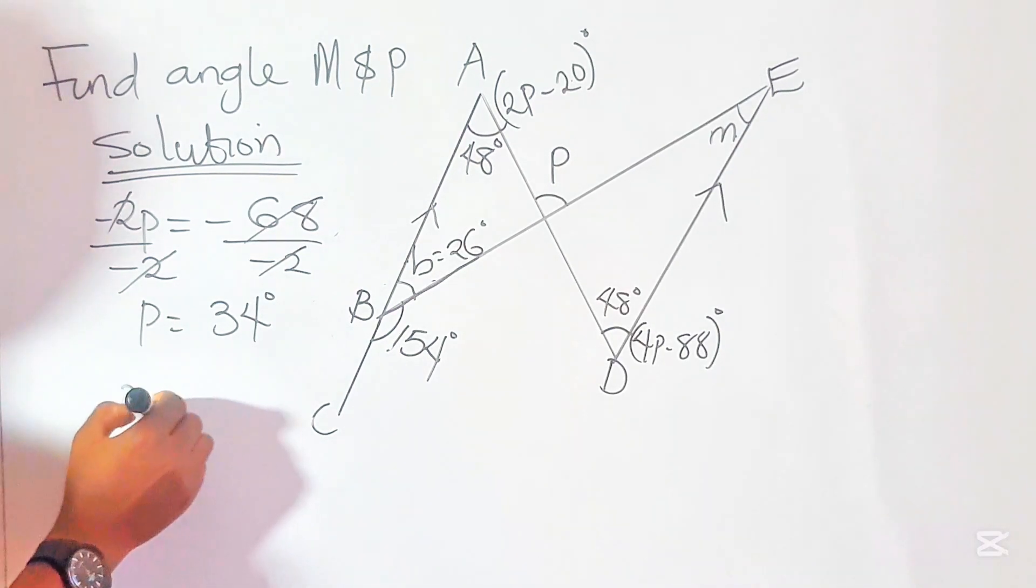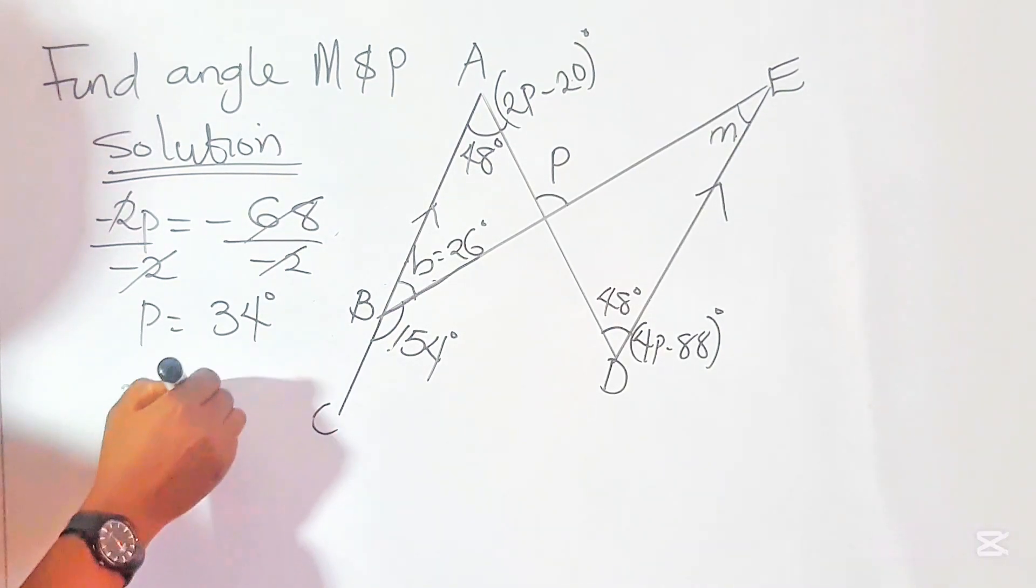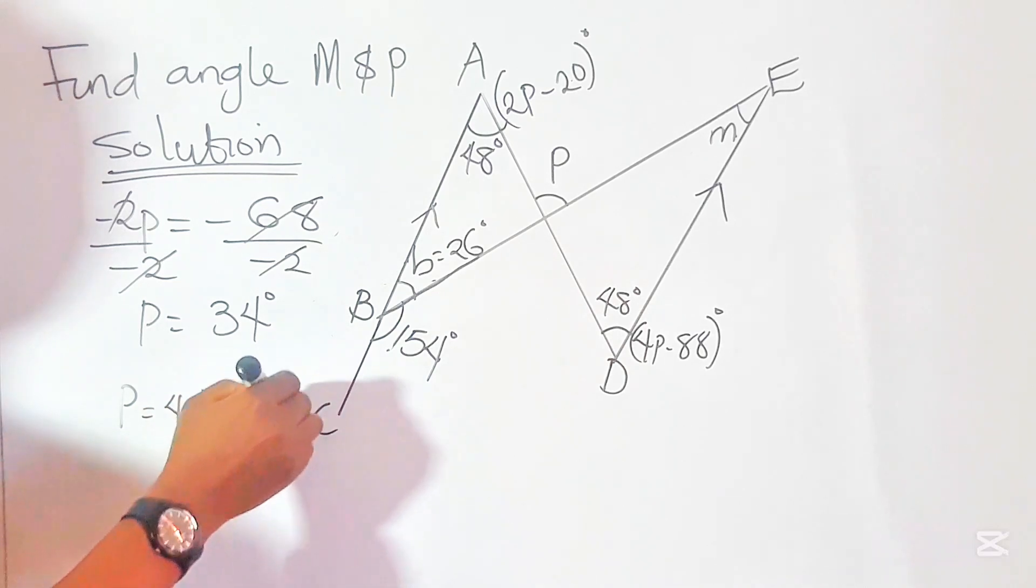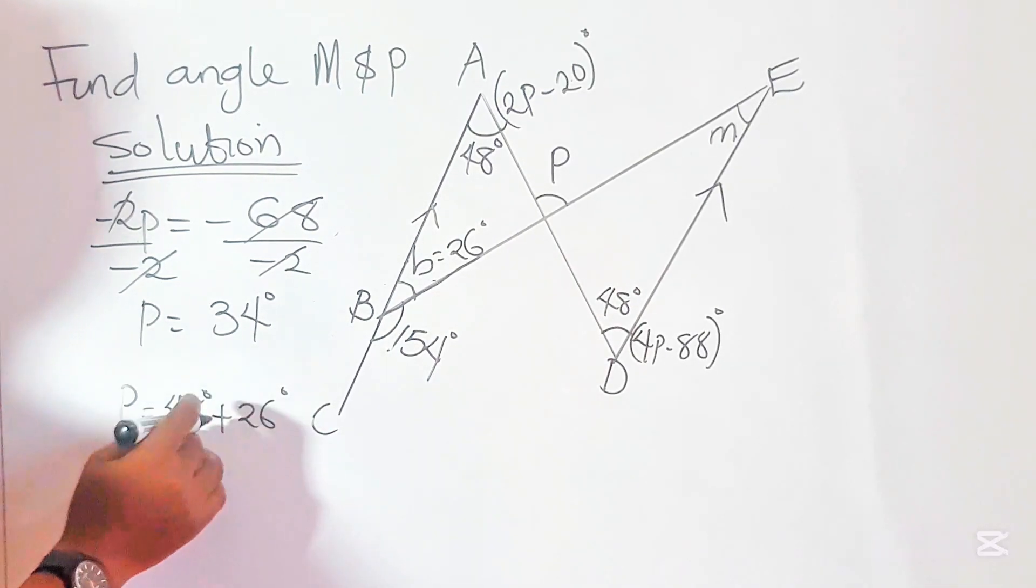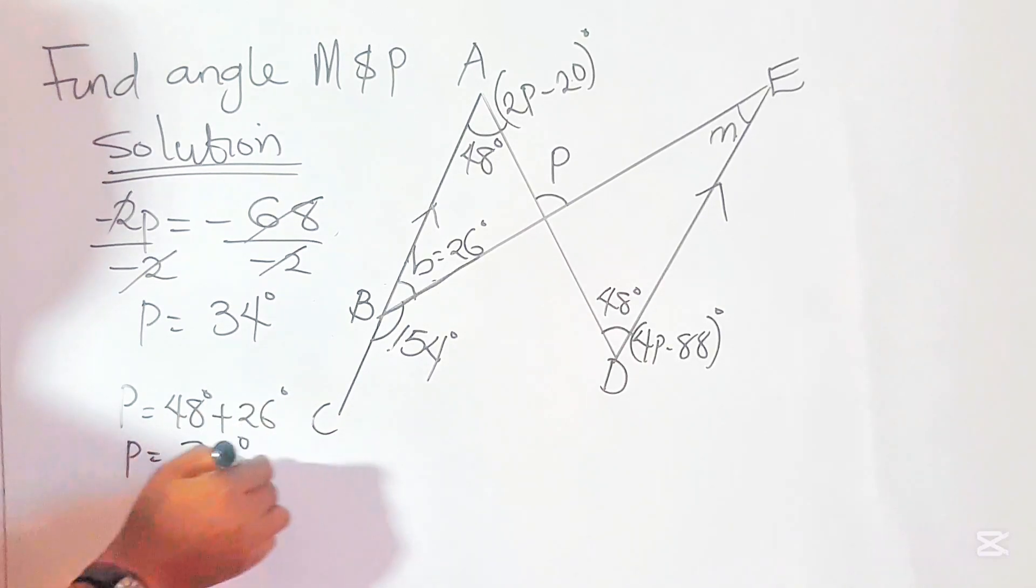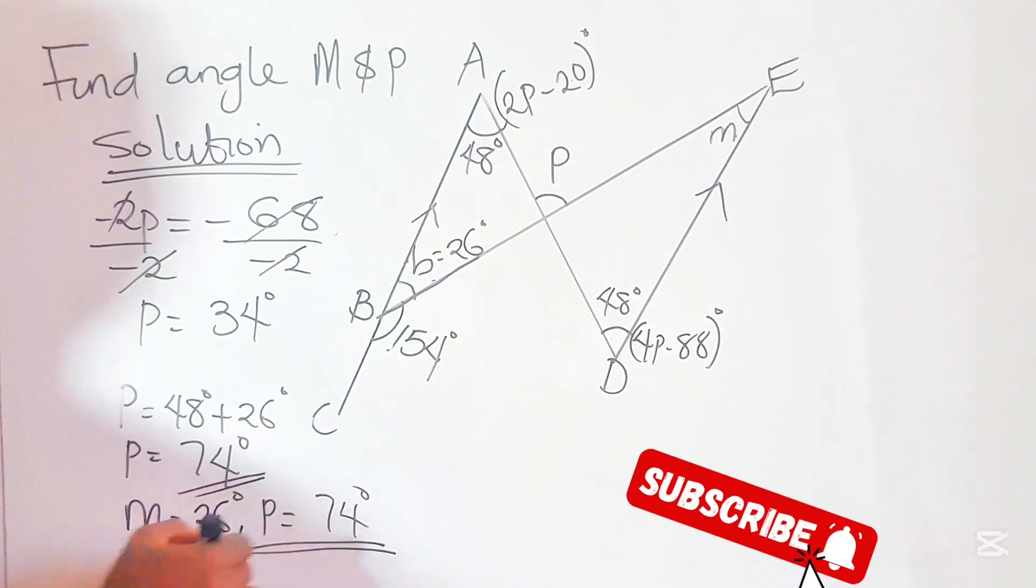Angle P equals 48 degrees plus 26 degrees. So P equals 48 plus 26 will give us 74 degrees. The value for M equals 26 degrees and the value for angle P equals 74 degrees as the answer.